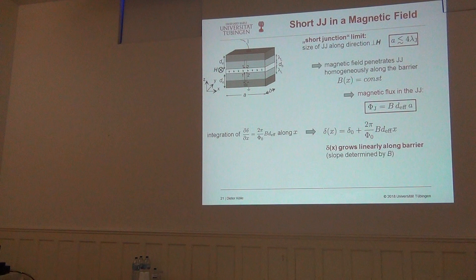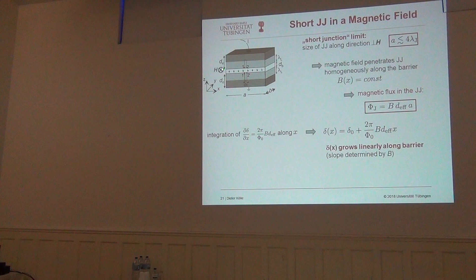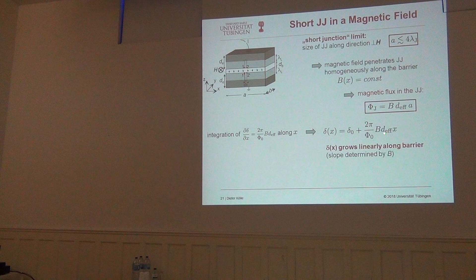If your B is constant, you can simply integrate d delta/dx along the x direction, and that gives you the important result that in this case of the short junction, your phase difference, if you apply a magnetic field in y direction, just linearly increases along x direction. And the slope of this increase of the phase difference is just given by the applied field.